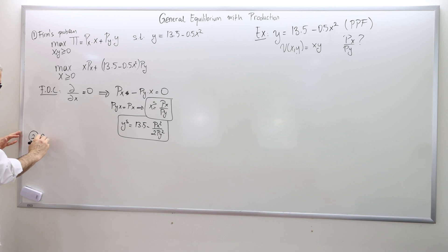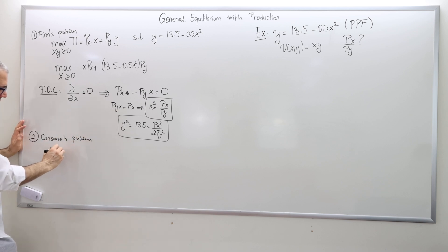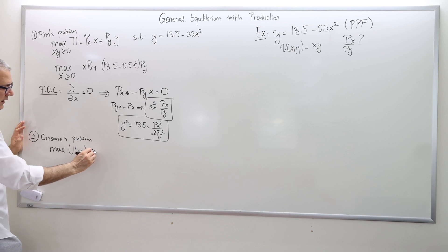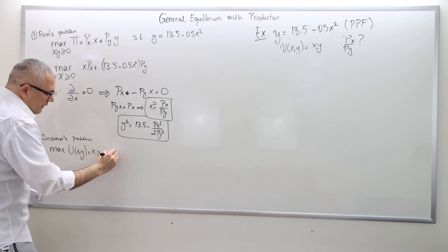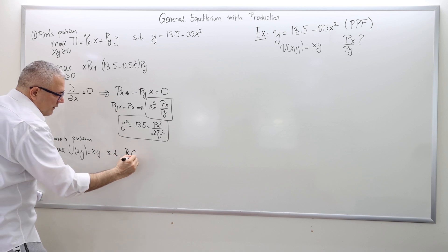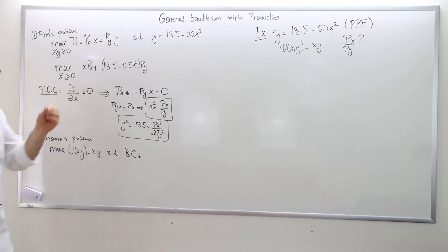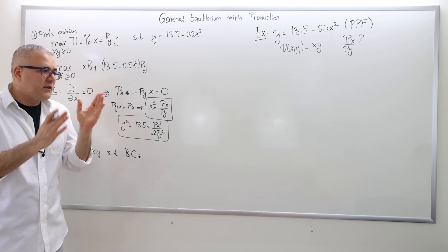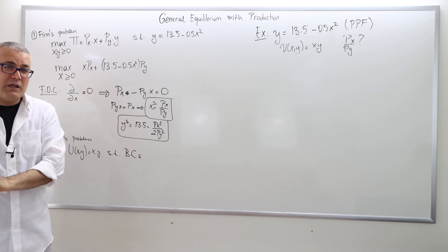Step two: the consumer's problem. The consumer's problem is to maximize utility, which is X times Y, subject to the budget constraint. The budget constraint is always: expenditure equals income.